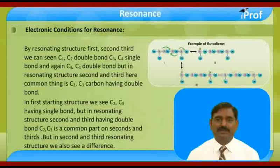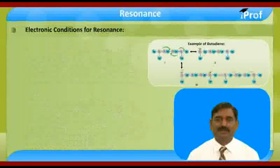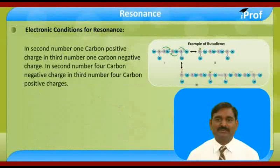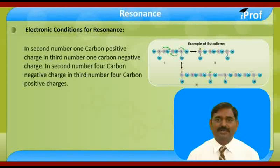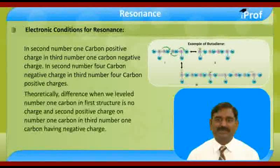But in the second and third resonating structures, we also see a difference. In structure two, carbon number one has a positive charge; in structure three, carbon number one has a negative charge. In structure two, carbon number four has a negative charge; in structure three, carbon number four has a positive charge.